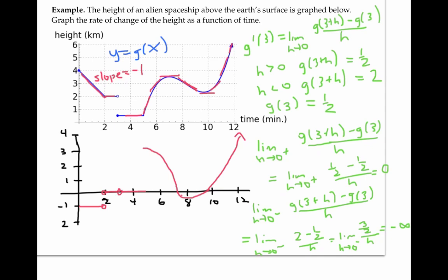At x equals five, again we have a corner, and by the same sort of argument we can conclude that the derivative does not exist. And finally, when x equals zero, we can only have a limit from the right, not the left. So by that technical reason, we don't have a derivative at that left endpoint either.